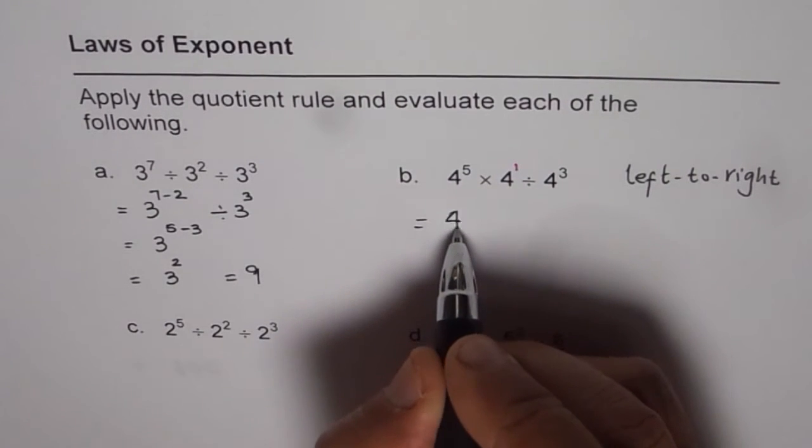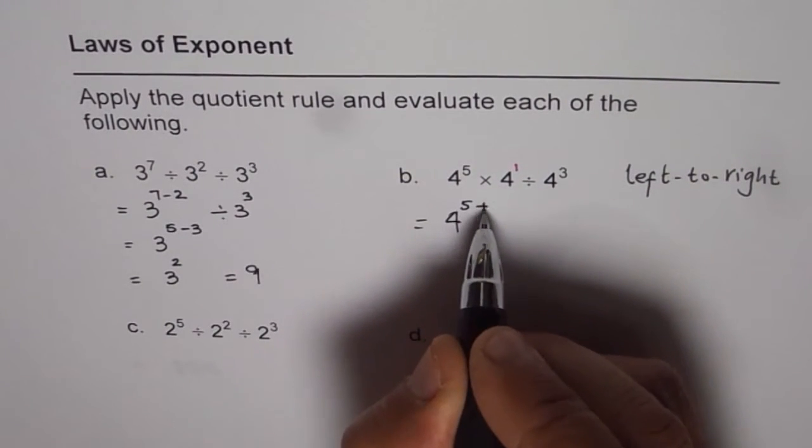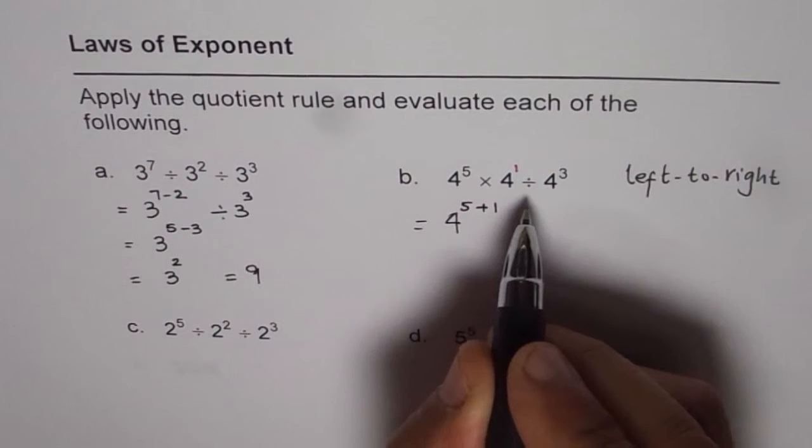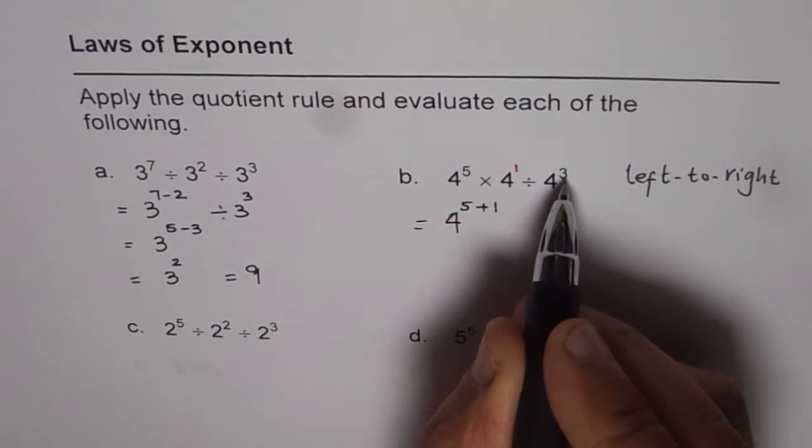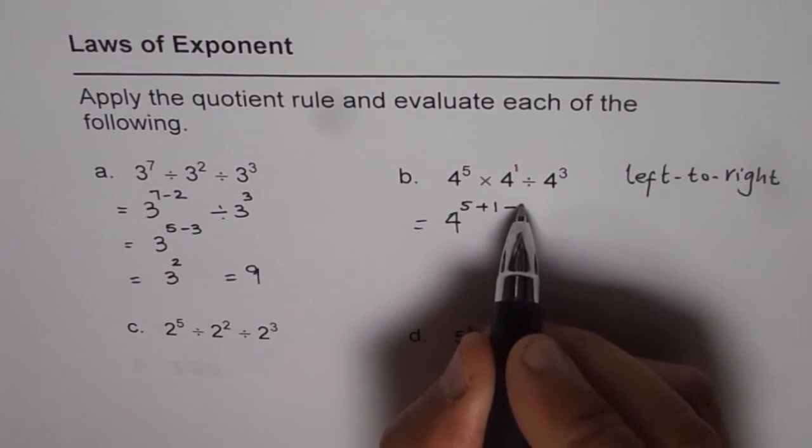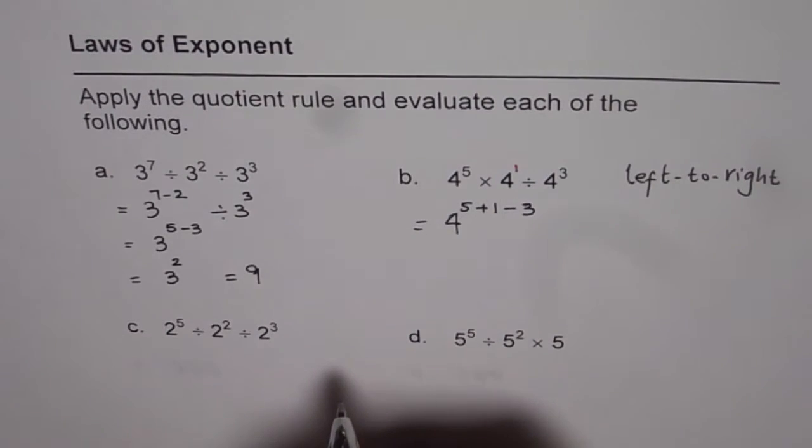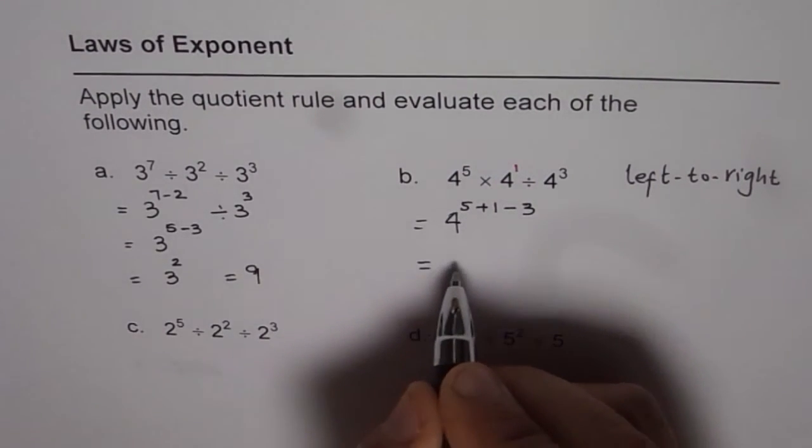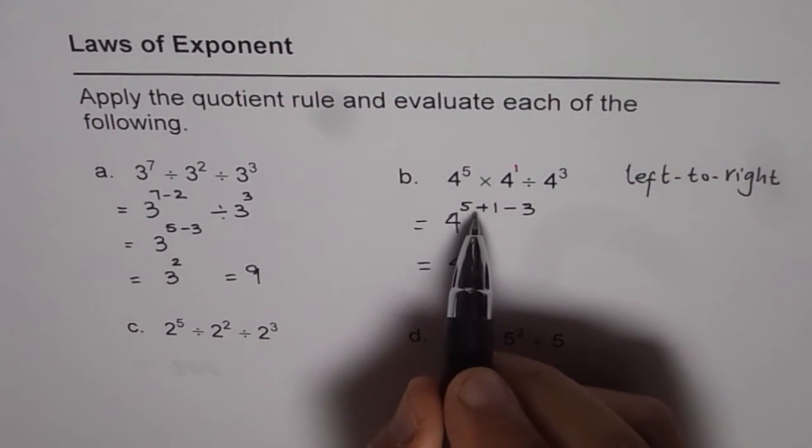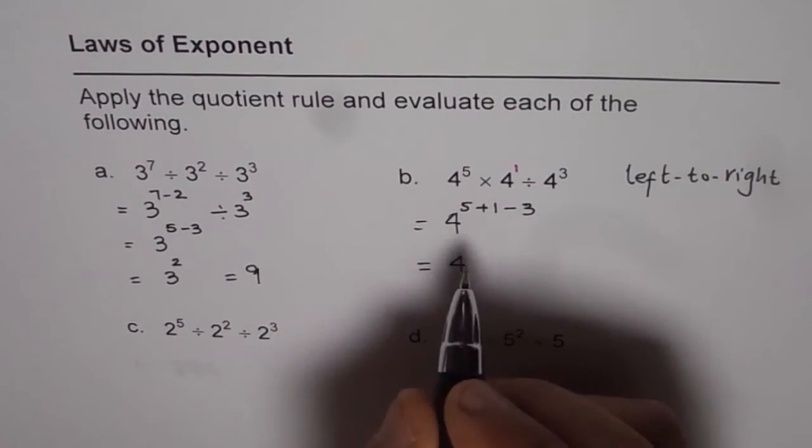4 plus 1 is 6. So we get 4 to the power of 5 plus 1. And then when we divide by 4 to the power of 3, it should be minus 3. So we could write it straight also. So we get 4 to the power of 5 plus 1 is 6. 6 minus 3 is 3.